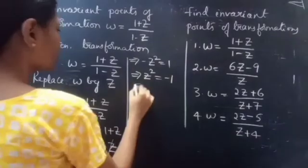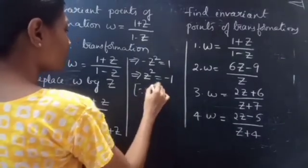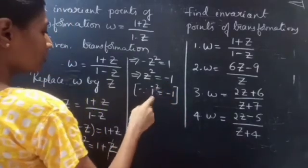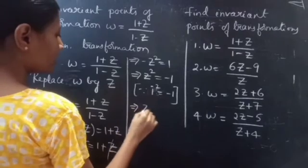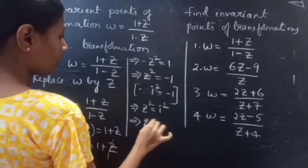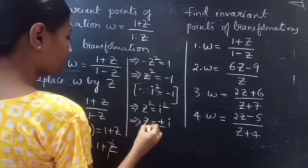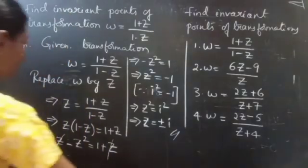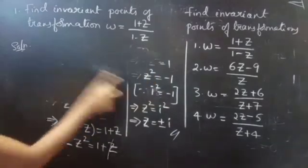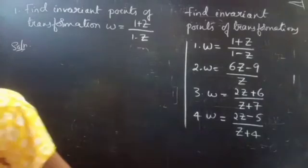You can write it as z squared equals to minus 1. Since we know that i squared equals to minus 1, you can replace this minus 1 with i squared. You will get z squared equals to i squared. From this you will get z equals to plus or minus i. Therefore, z equals to plus or minus i are the fixed points of the given transformation.